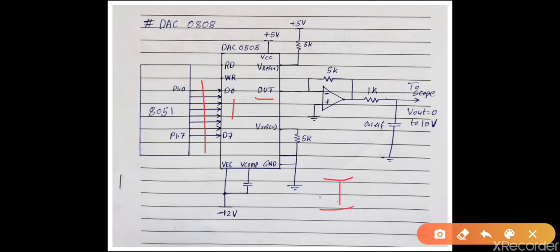You can get analog output current at the output pin. You can convert this analog output current to output voltage with the help of an op-amp. Instead of using an op-amp, you can simply use a resistor network, but with change in load the output voltage will vary. That is why an op-amp is used with a feedback resistor of 5k.